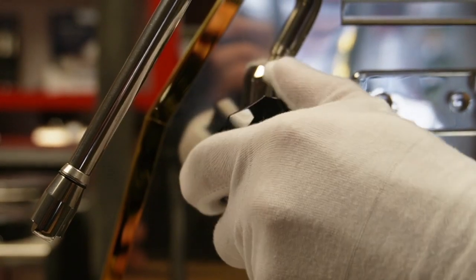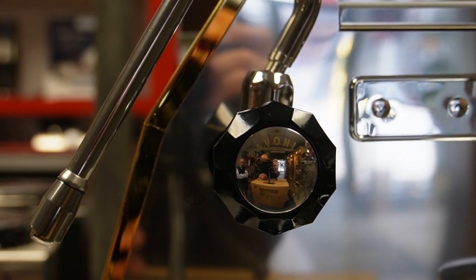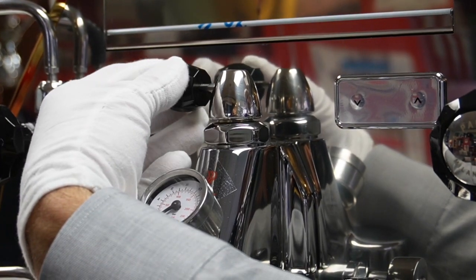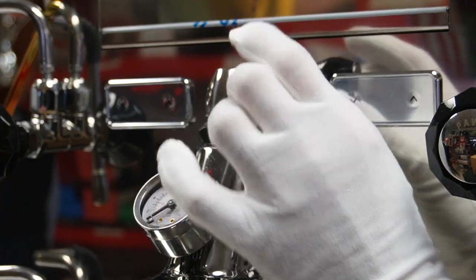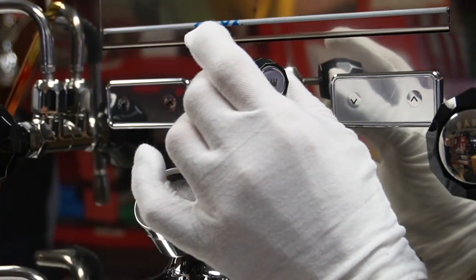Located just above the brew group is a unique feature of the Diamantina, the Brewing Pressure Profile Control, or BPPC. By adjusting the brewing pressure, this allows you to further customize your coffee's extraction.